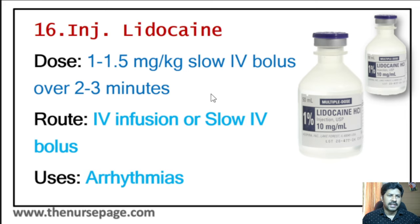Thirty-second injection is naloxone, mainly used in the operation room. Emergency uses include reversal of respiratory depression and sedation caused by opioid overdose, or as part of anesthesia reversal. Routes of administration include intravenous, intramuscular, subcutaneous, or intranasal. Intranasal spray is also available. Dosage is 0.4 to 2 milligram IV, IM, or subcutaneous, repeated every 2 to 3 minutes as needed; intranasal spray is 2 milligram in each nostril.